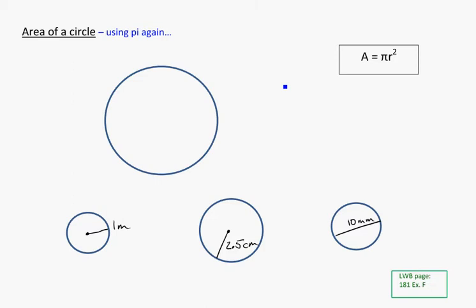Area of a circle, and we're going to be using pi again. My area formula here is area is equal to pi times r squared. And don't forget about that invisible times sign, so you can think about that as pi times r squared. And remember that r squared is just r times r.